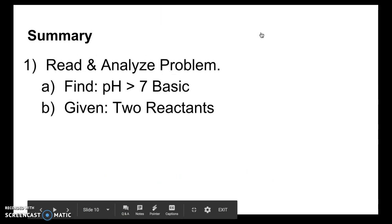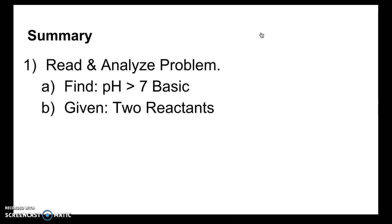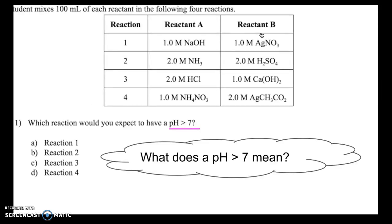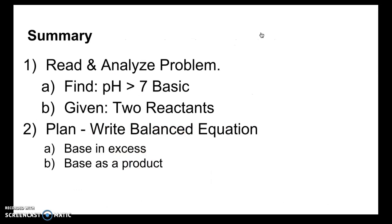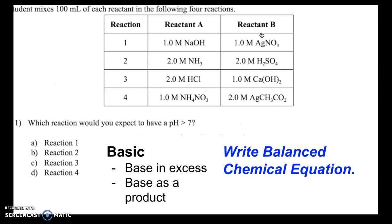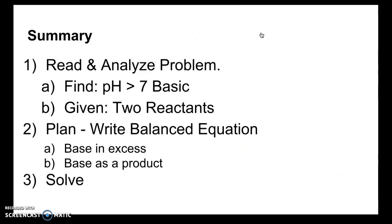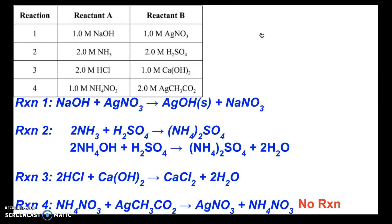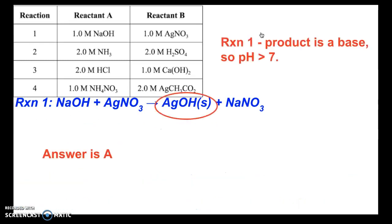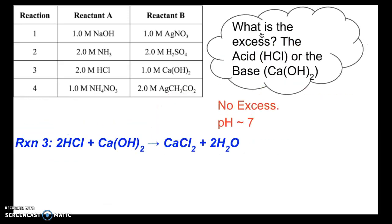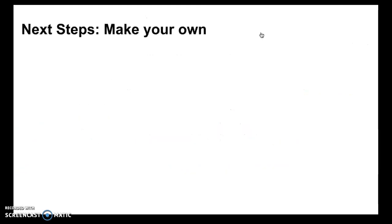To recap: we read and analyzed the problem, determined that pH greater than 7 means basic, and looked at what we were given — two reactants. We made a plan to write balanced chemical equations to determine which base is in excess or if we had a base as a product. We then wrote balanced chemical equations for all reactions and used those to figure out which reaction either had a base as a product or an excess base.